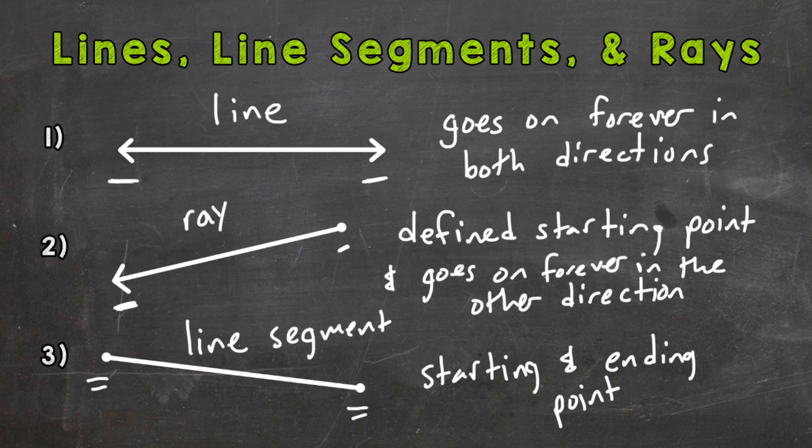Just to recap, a line goes on forever in both directions. A ray has a starting point and then goes on forever in the other direction. And the line segment has a starting and an ending point.